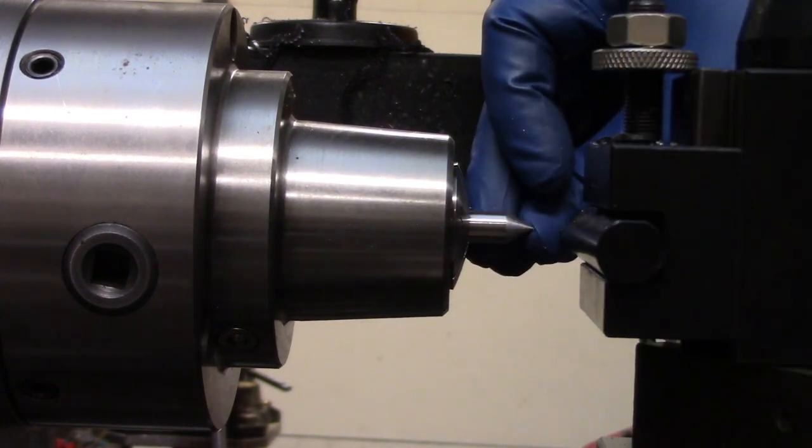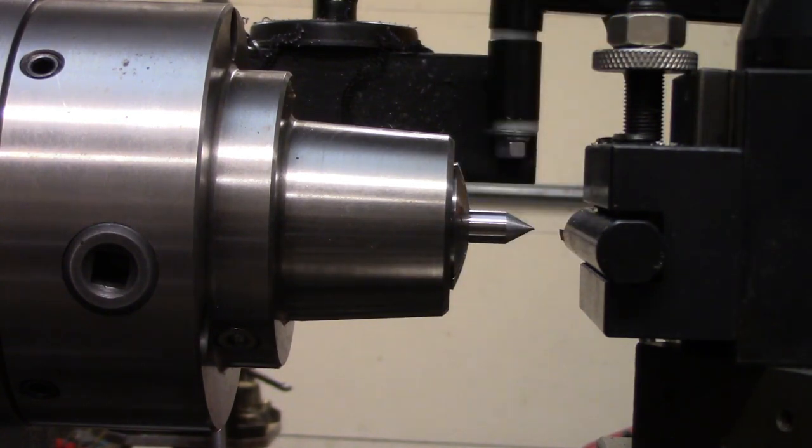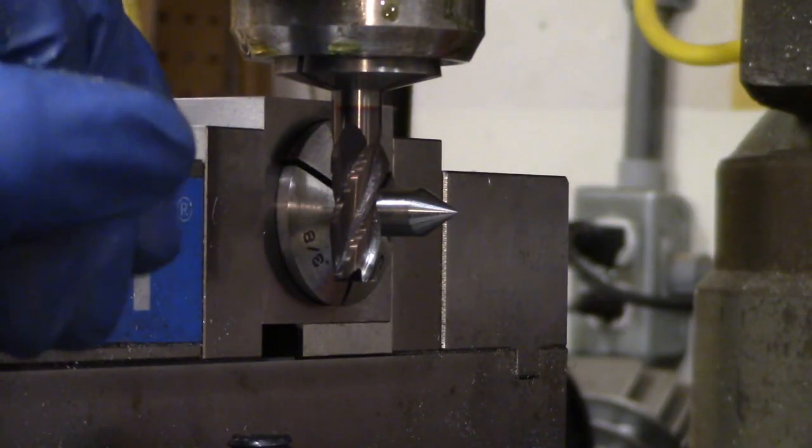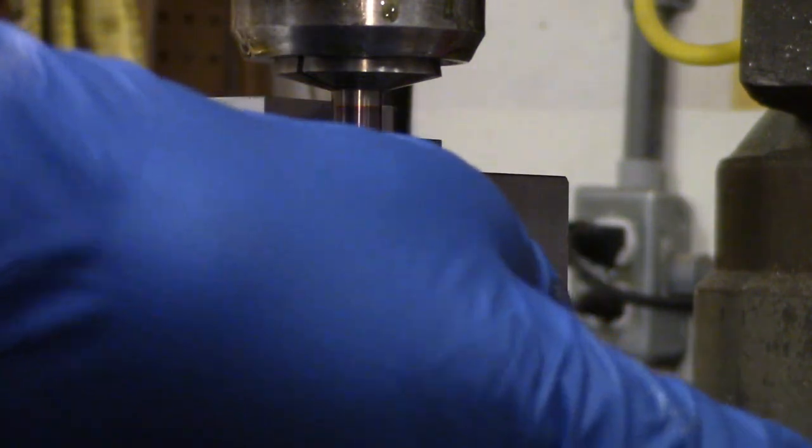Okay, that looks pretty good. It's nice and pointy. Time to go over to the mill. Now I'm going to mill away half of this tool. This is a pretty straightforward milling operation. I'll touch off on this side.